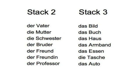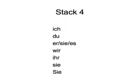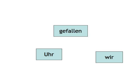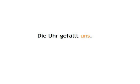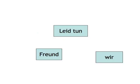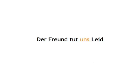Make a second stack with people, a third stack with object nouns, and a fourth stack with personal pronouns: ich, du, er, sie. You first take a card from the verb stack. Depending on the verb you picked, you take a card either from the object or the person stack, and then a card from the pronoun stack. So if you picked 'gefallen', you take an object card — for example, die Uhr — and a pronoun card — for example, wir — and you get the sentence: Die Uhr gefällt uns. If you pick 'leid tun', you pick a person like Freund and a pronoun like wir, forming the sentence: Der Freund tut uns leid.